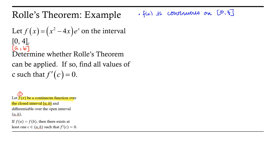The second criterion is that the function is differentiable over the open interval from a to b — in this case, differentiable for all values of x between 0 and 4. Given that we have a product of a polynomial and an exponential function, both of which are differentiable, their product via the product rule is also differentiable. So criteria two is also met.